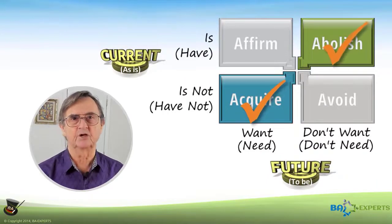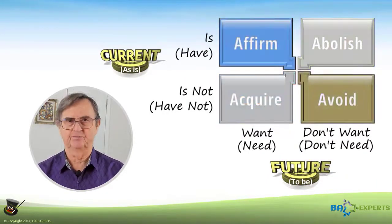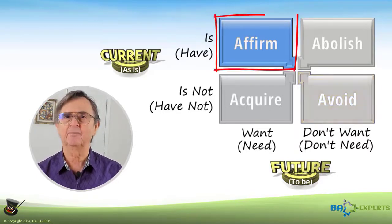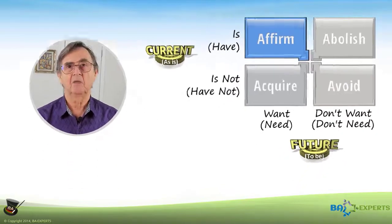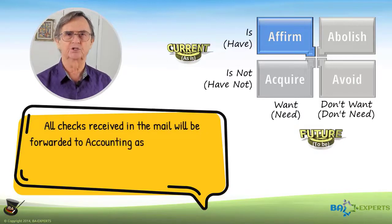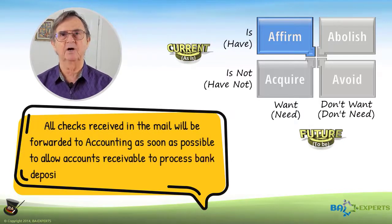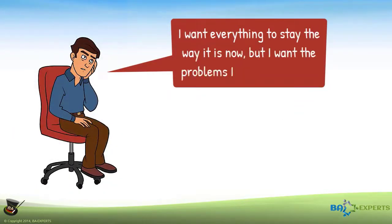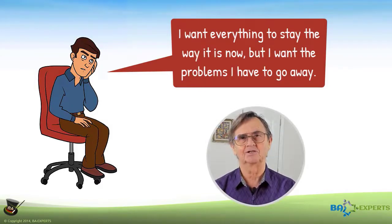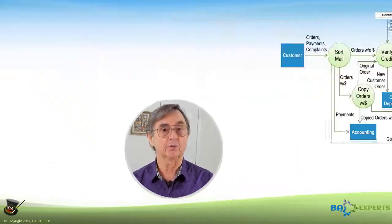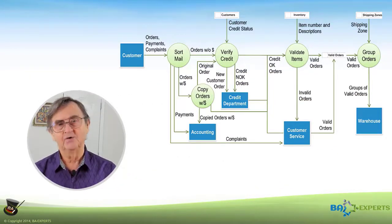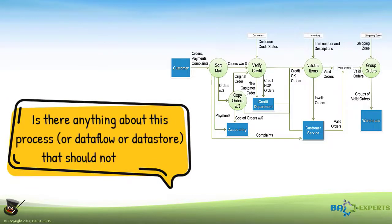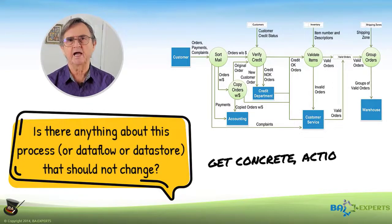Once you've addressed what should change to solve your problems, you don't want to neglect what should not change. Requirement types that are all too often overlooked are things we have now and want to keep. An example might be: 'All checks received in the mail will be forwarded to accounting as soon as possible to allow accounts receivable to process bank deposits the same day we receive the check.' All too often we get the general requirement: 'I want everything to stay the way it is now, but I want the problems I have to go away.' That general requirement is an oxymoron because your current workflow is the reason for your current problems. If you walk the domain expert through the diagram and ask for each item whether anything about this process, data flow, or data store should not change, you're a lot more likely to get concrete, actionable requirements.